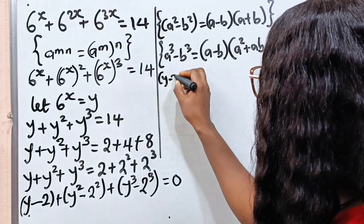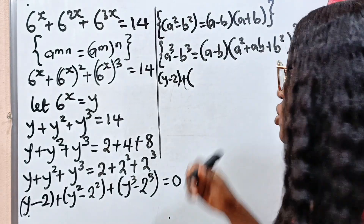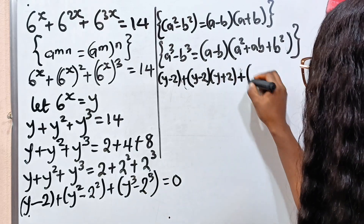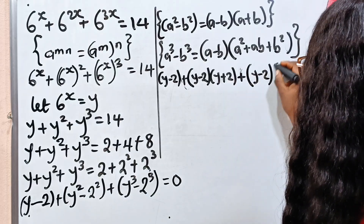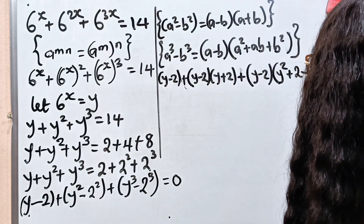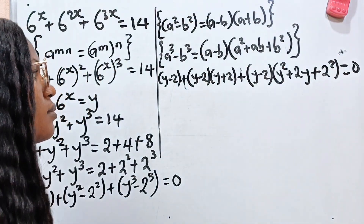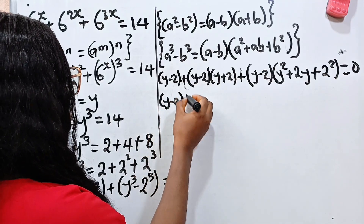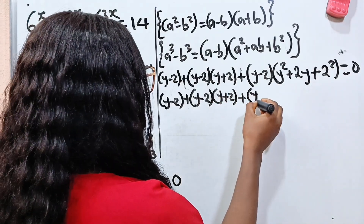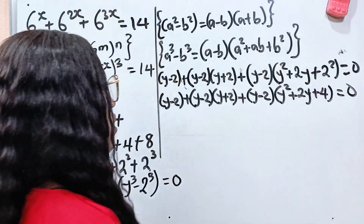So we start with y minus 2 multiplied by y plus 2, plus y minus 2 times open bracket y squared plus 2y plus 2 squared, equals 0. So now we have: y minus 2, plus y minus 2 multiplied by y plus 2, plus y minus 2 bracket y squared plus 2y plus 4, equals 0.